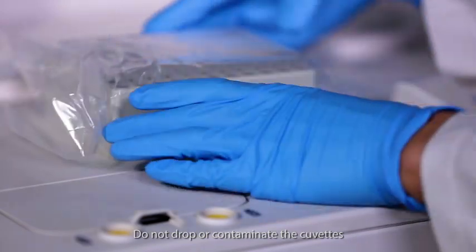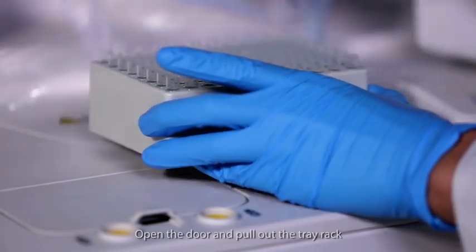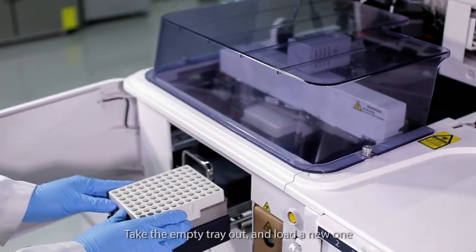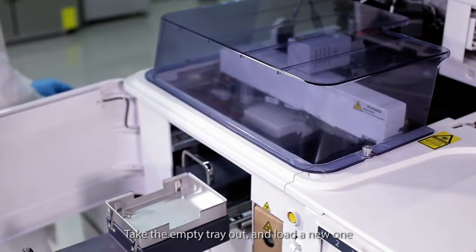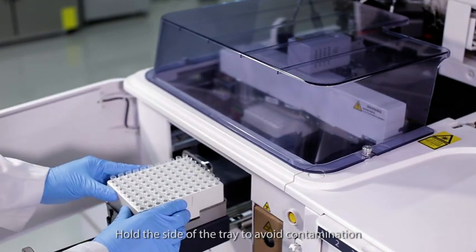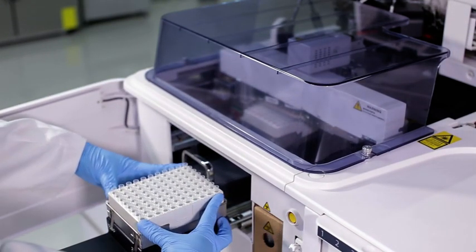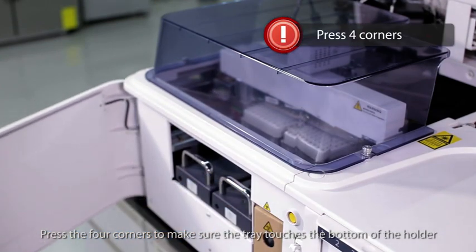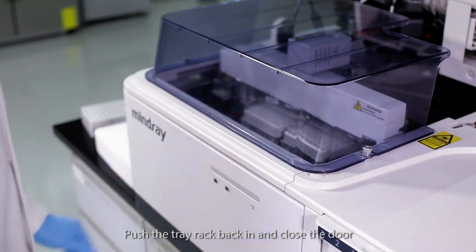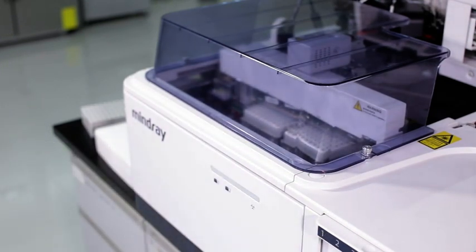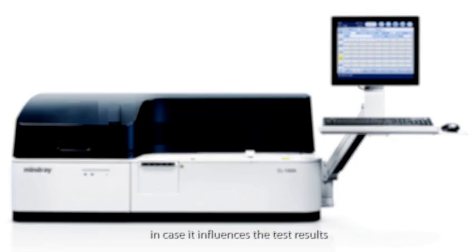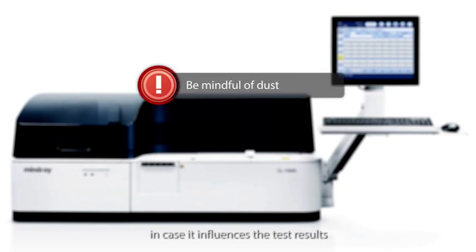Open the door and pull out the tray rack. Take the empty tray out and load a new one. Hold the side of the tray to avoid contamination. Press the four corners to make sure the tray touches the bottom of the holder. Push the tray rack back in and close the door. The software can automatically refresh the number of remaining cuvettes. Be mindful of dust in case it influences the test results.